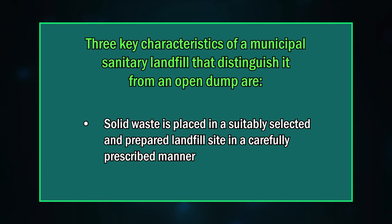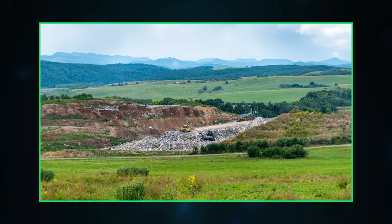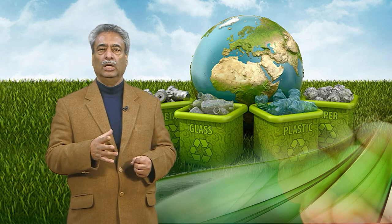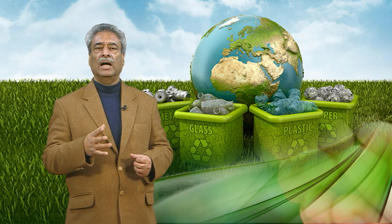Sanitary landfill is a depression in an impermeable soil layer that is lined with an impermeable membrane. The three key characteristics distinguishing it from an open dump are: solid waste is placed in a suitably selected and prepared site in a carefully prescribed manner; the waste material is separated and compacted with appropriate heavy machinery; and the waste is covered each day with a layer of compacted soil. The problems with older landfills are associated with groundwater pollution from pollutants seeping out from the bottom.